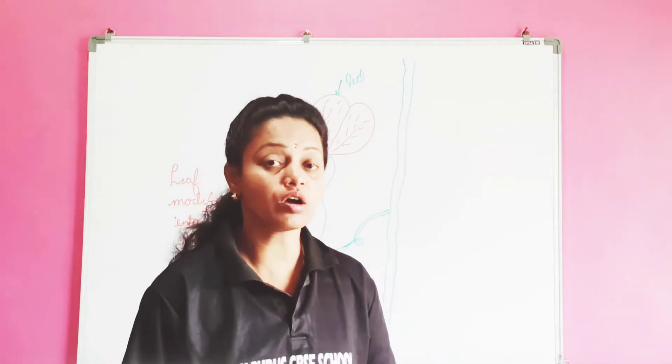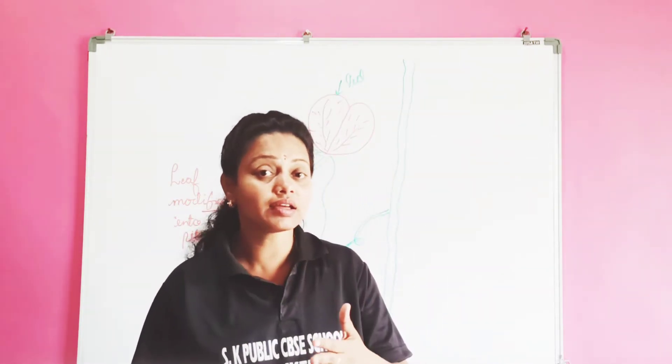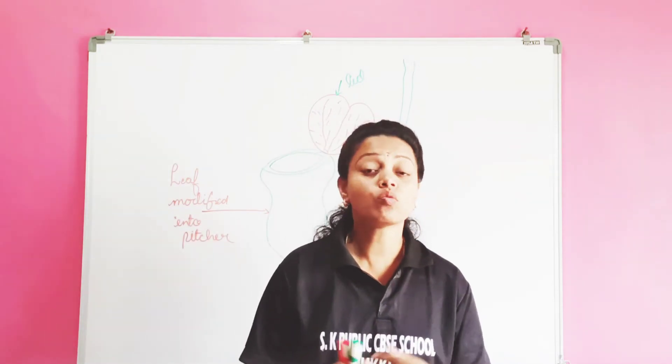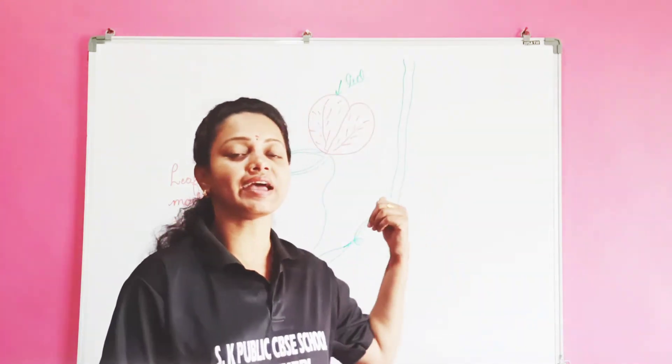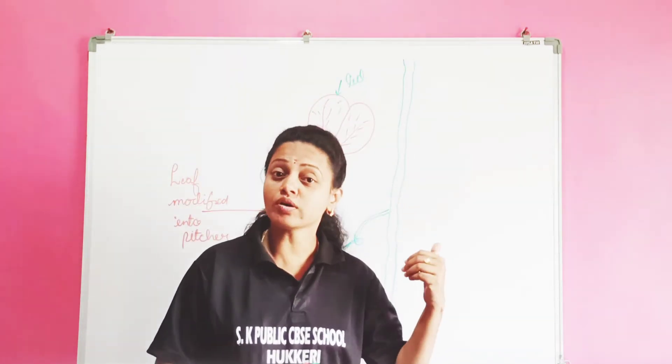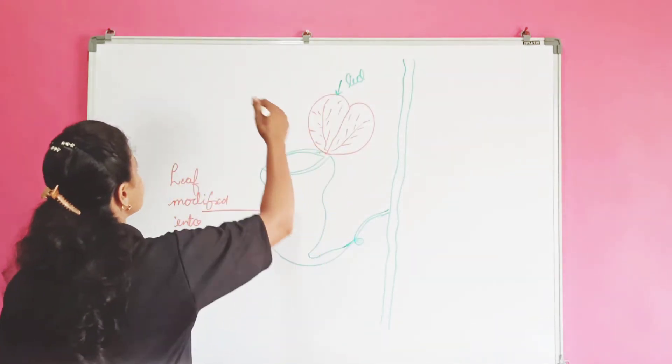Now you know what is the meaning of autotroph. Few plants lack chlorophyll. What do they have to do? They will start eating insects. You can see behind me I have drawn a plant that is called pitcher plant.